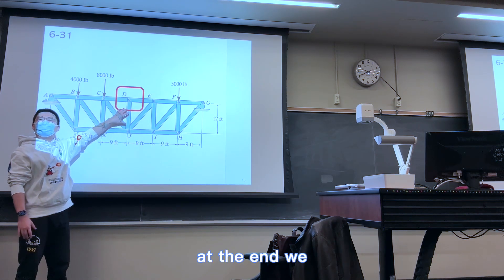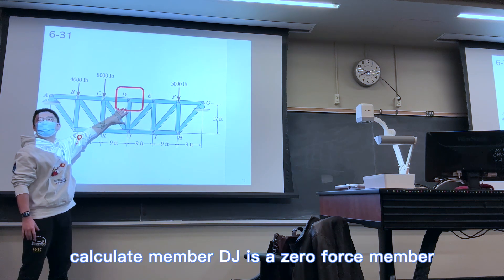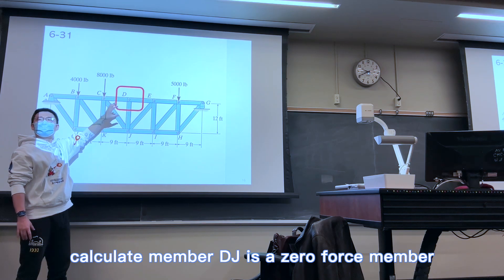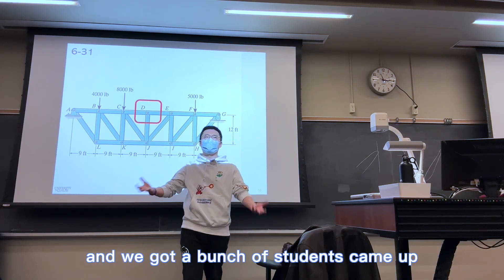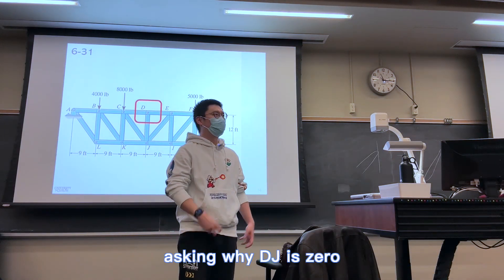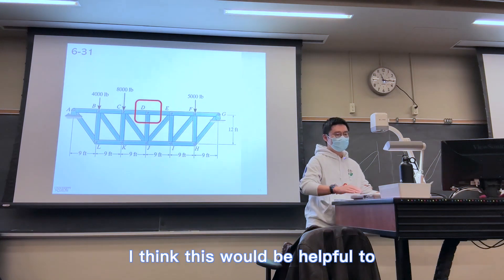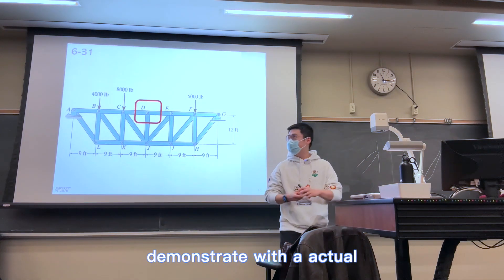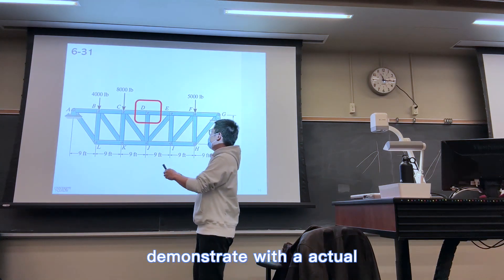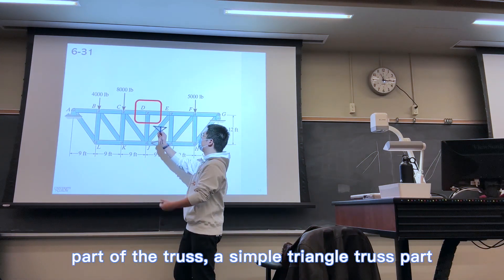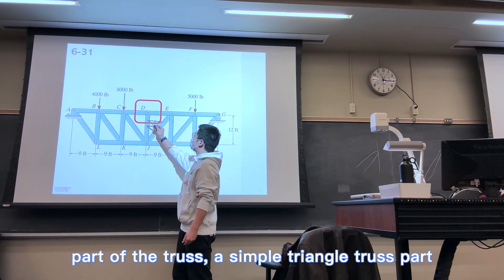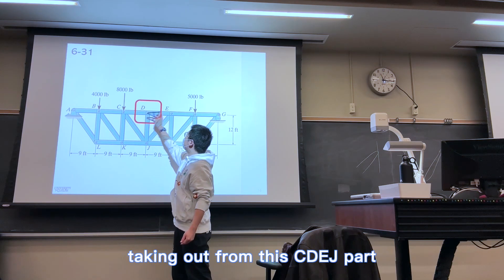At the end, we calculated member DJ is like a zero-force member, and we got a bunch of students came up asking why DJ is zero. I think this would be helpful to demonstrate with an actual part of the truss, single truss, triangle truss part, taking out from the CDEJ part.